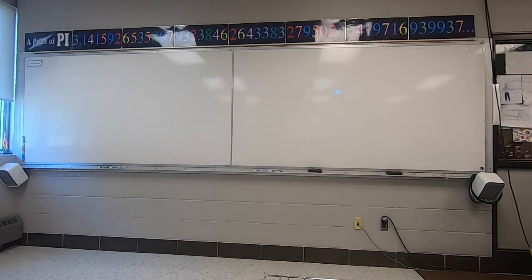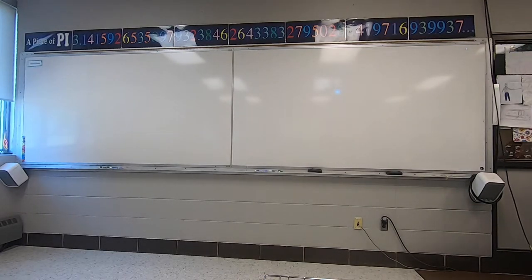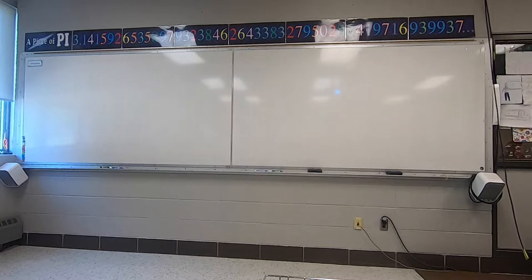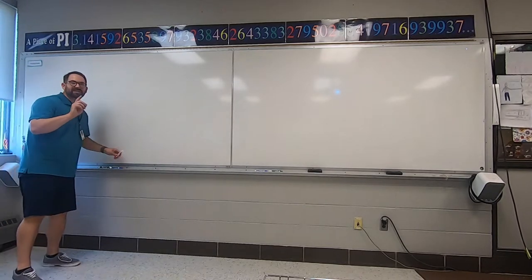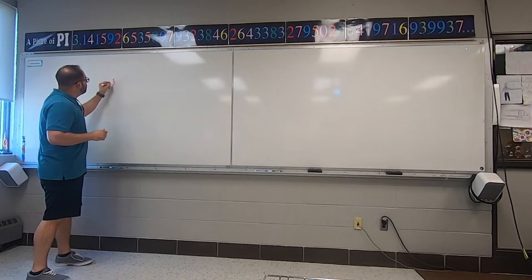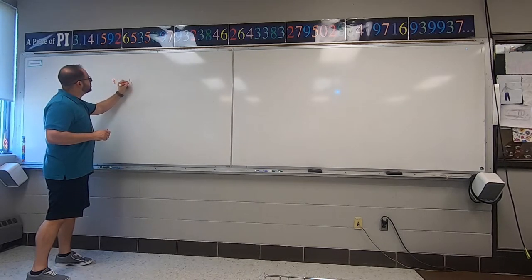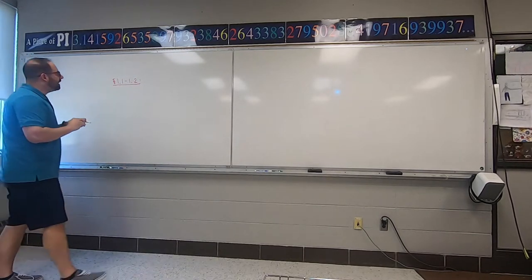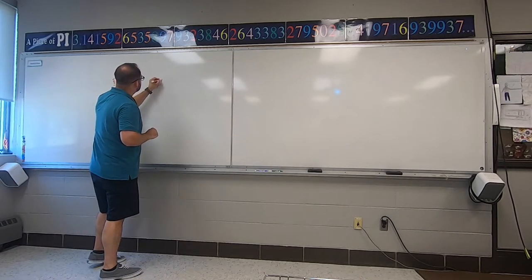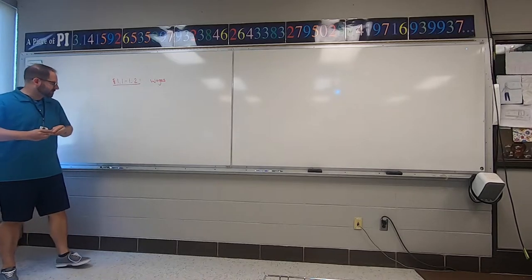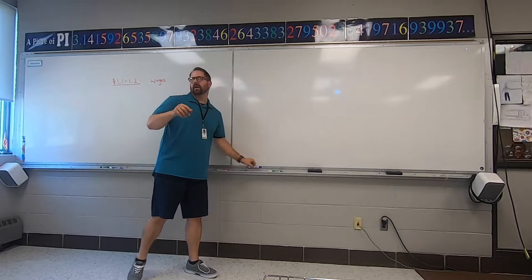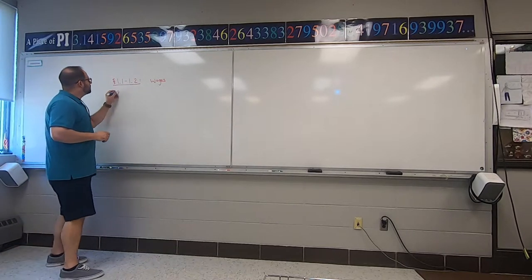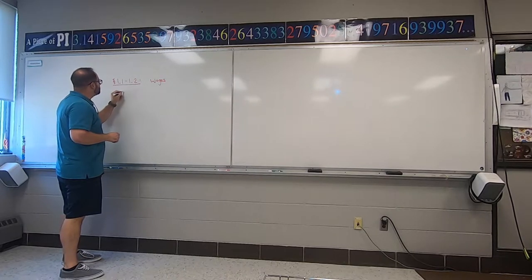Let's walk through what we're doing today. We're talking about wages — we're in the first section of the textbook, section 1.1, and we're going to be dealing with 1.2 as well, kind of mixing them together since they're the same topic. Wages is the pay you get for working a certain job. There are a couple of different types of wages.